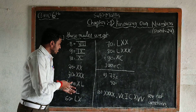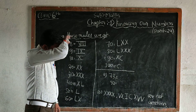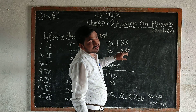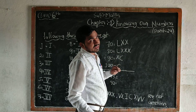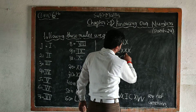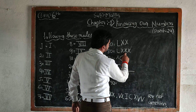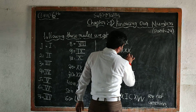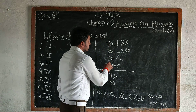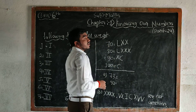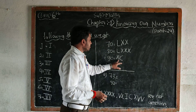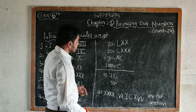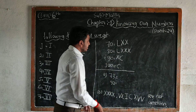L means 50. 80 is L plus XXX — that is 50 plus 10 plus 10 plus 10, which equals 80. For 90: C minus X — that means 100 minus 10 equals 90. And 100 value is C only.